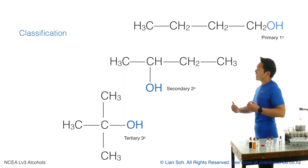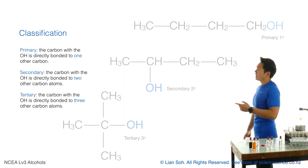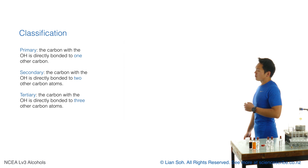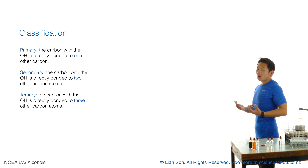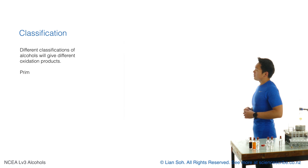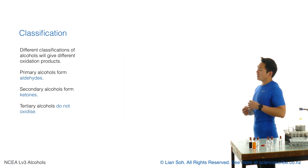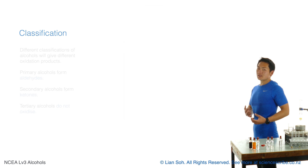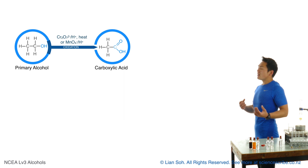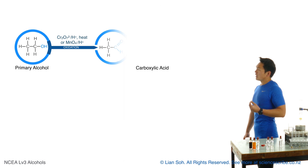From last year you also know that alcohols can be classified into three distinct groups: primary, secondary, and tertiary. That depends on how many carbon atoms are directly bonded to the carbon that has the OH group. This was important last year because primary alcohols oxidize — and while we told you they go straight to a carboxylic acid, the reality is they first form an aldehyde very quickly.